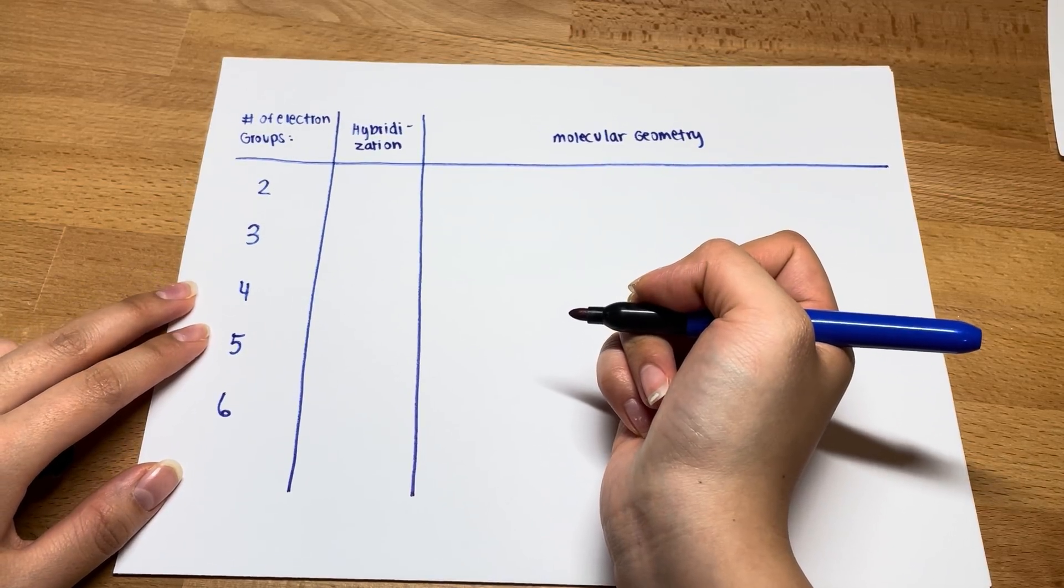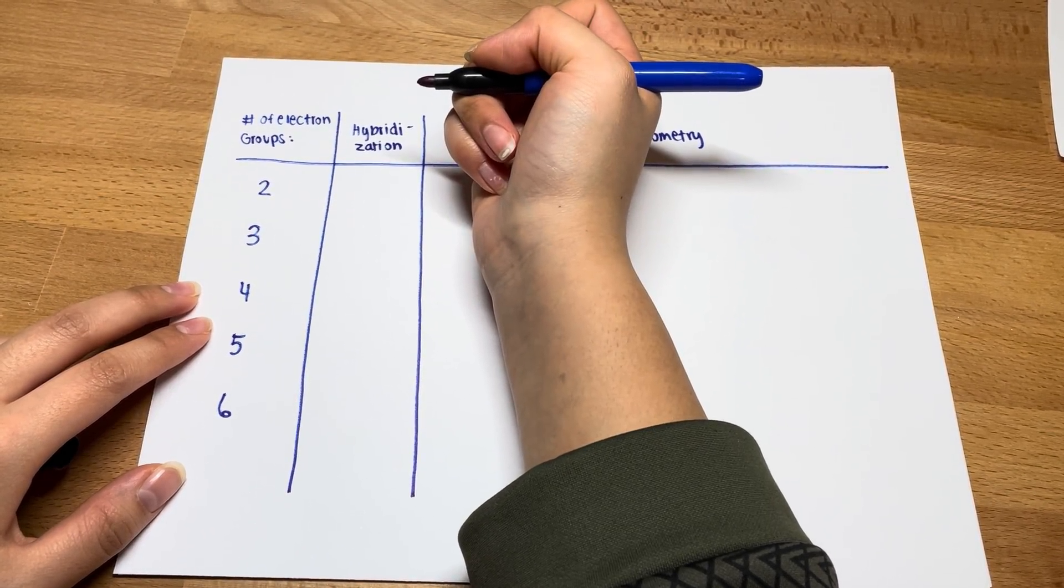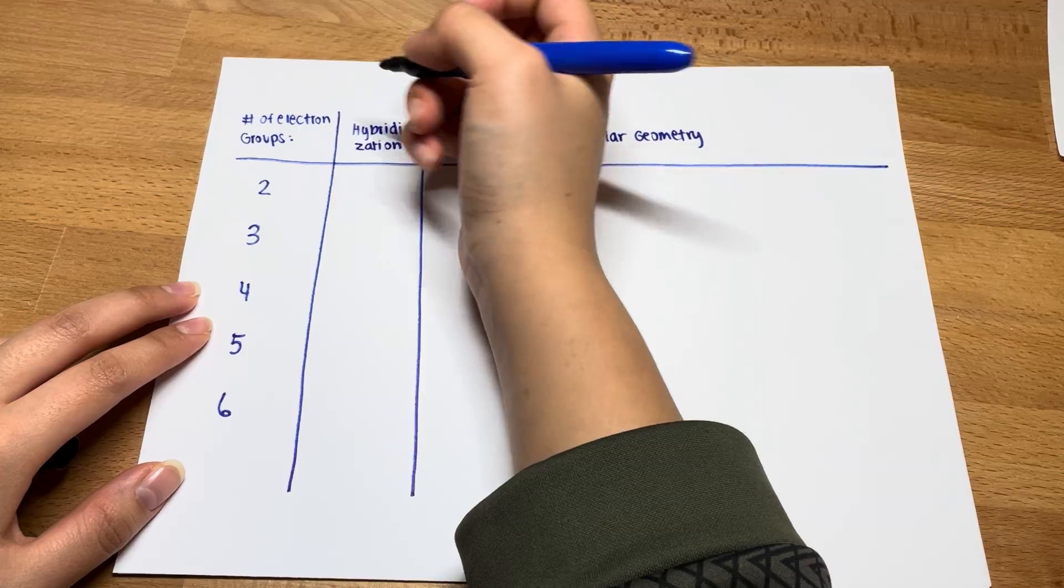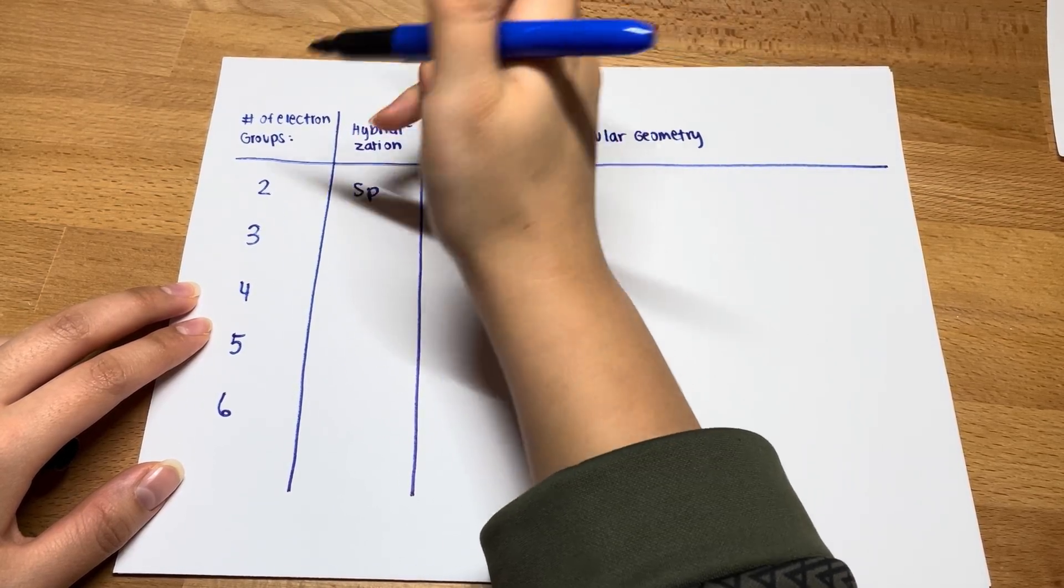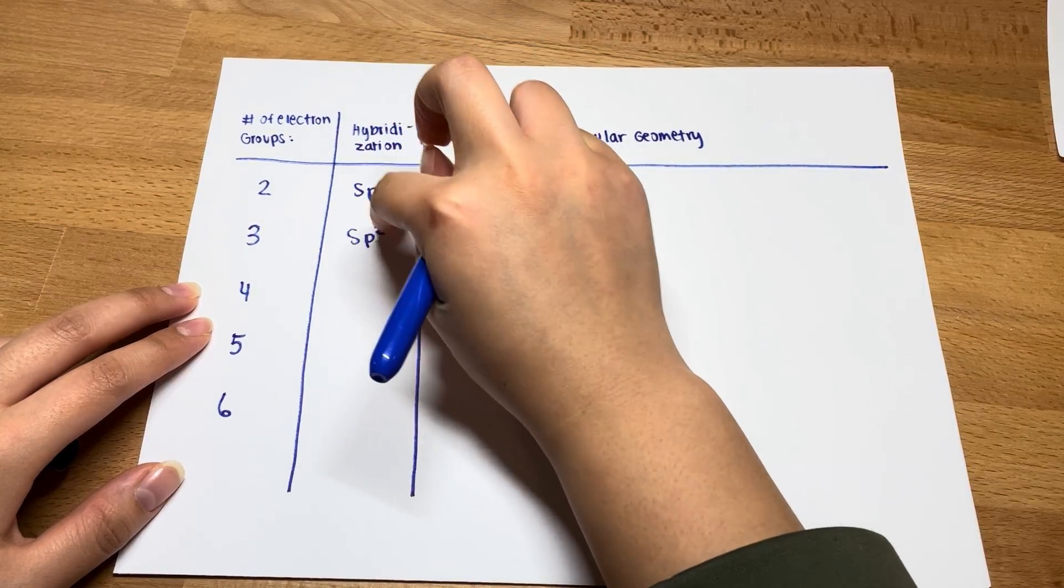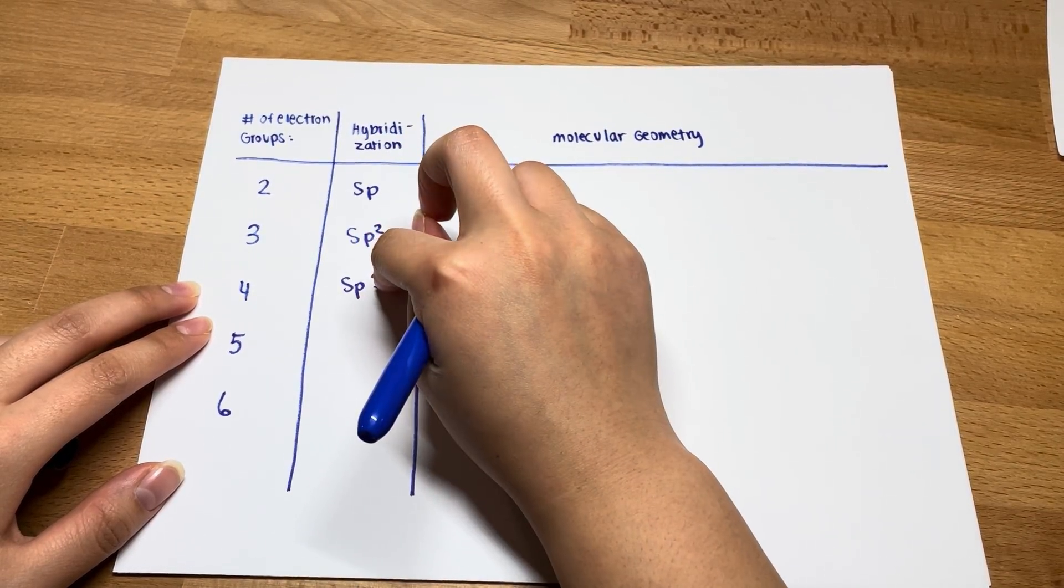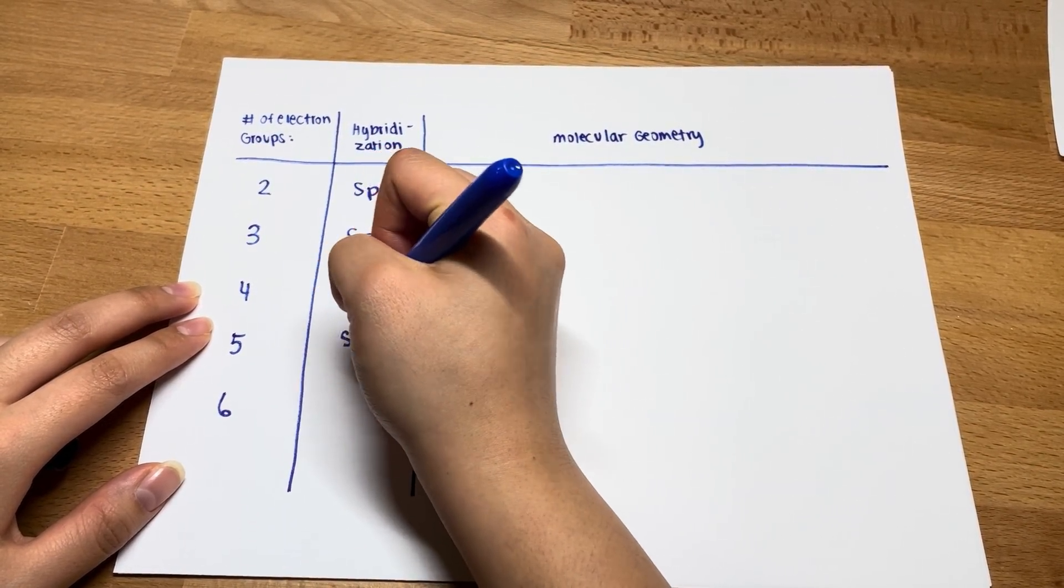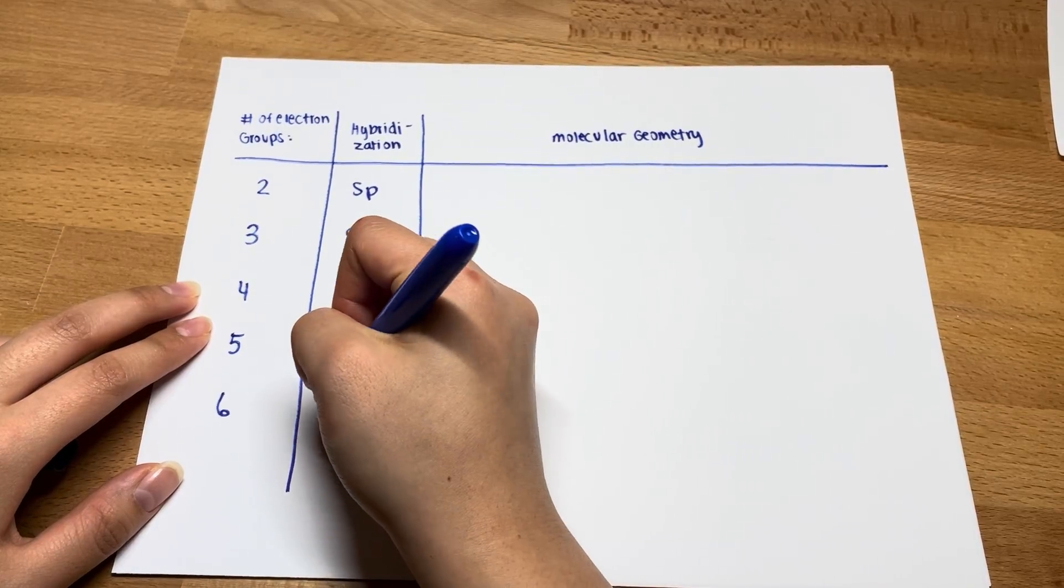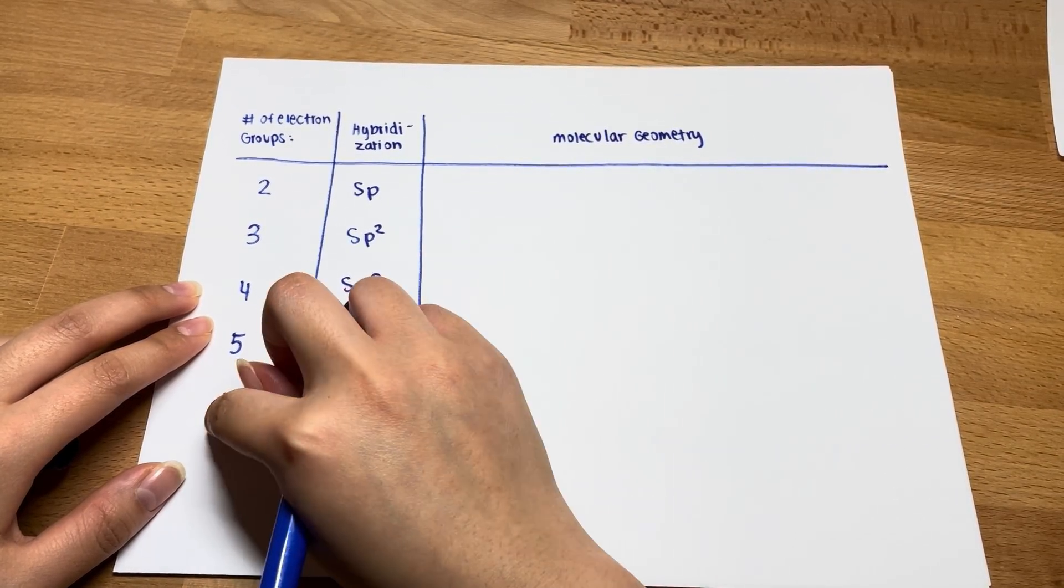Now hybridization. Remember, imagine for every letter without a superscript, you want to imagine there's an imaginary one. So sp, there's 1 here, 1 here, 1 plus 1 is 2. sp2, 1 here, 2 here, 1 plus 2 is 3. sp3, 1 here, 3 here, 3 plus 1 is 4. Sp3d, 3, 1, 1, 3 plus 2 is 5. Sp3d2, 3, 4, 5, 6, which is 6.